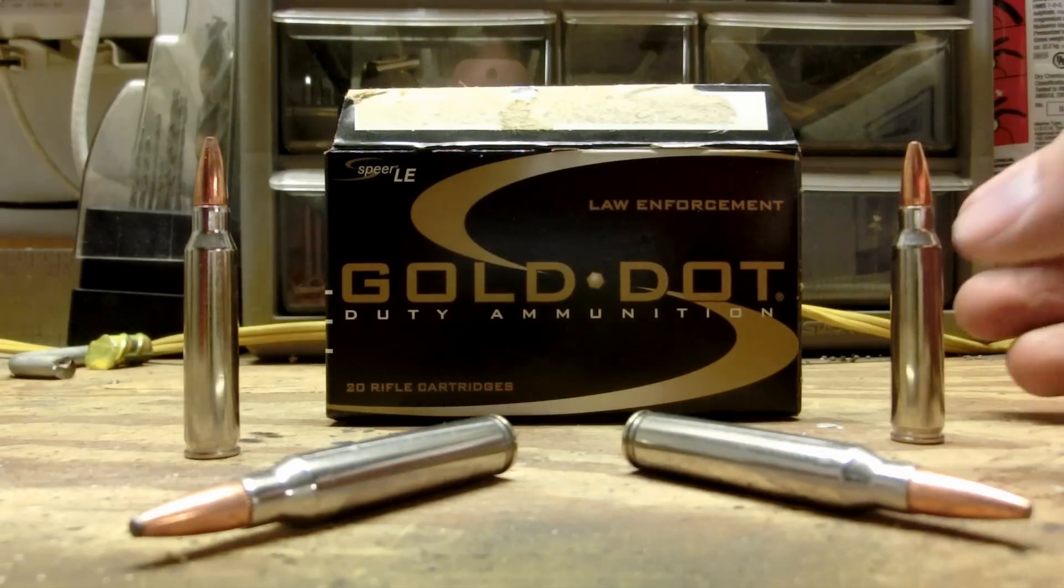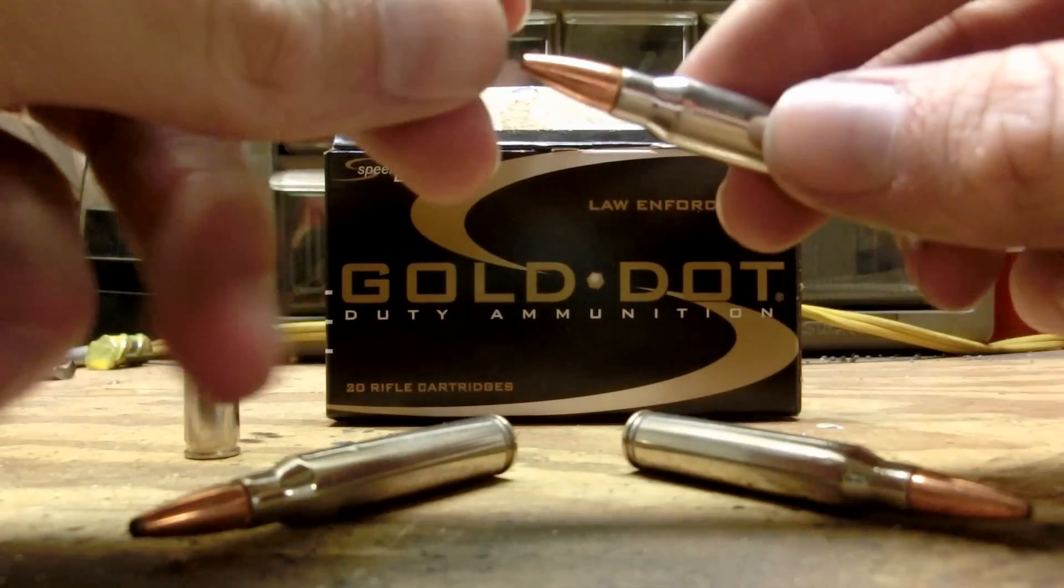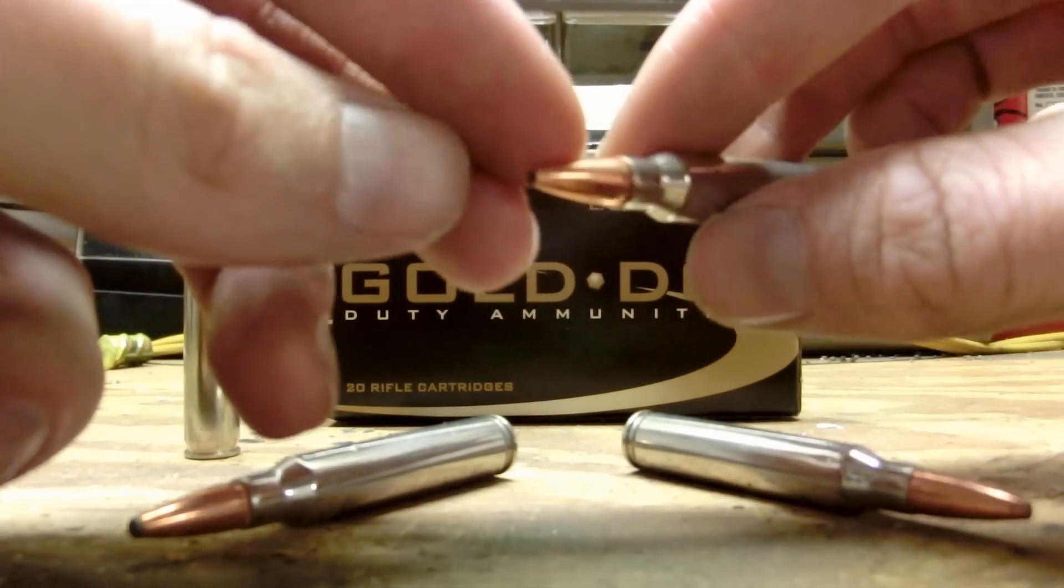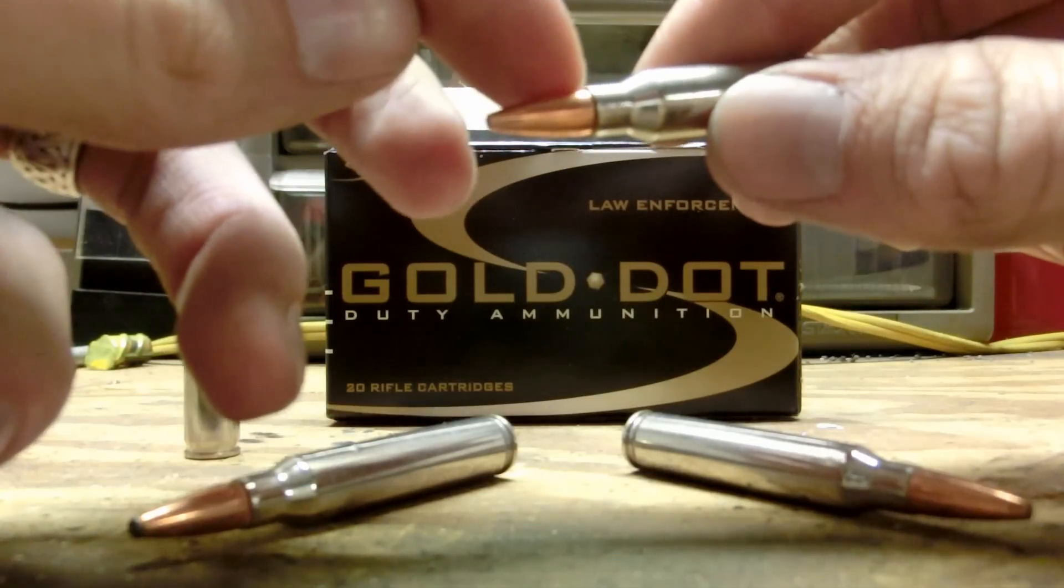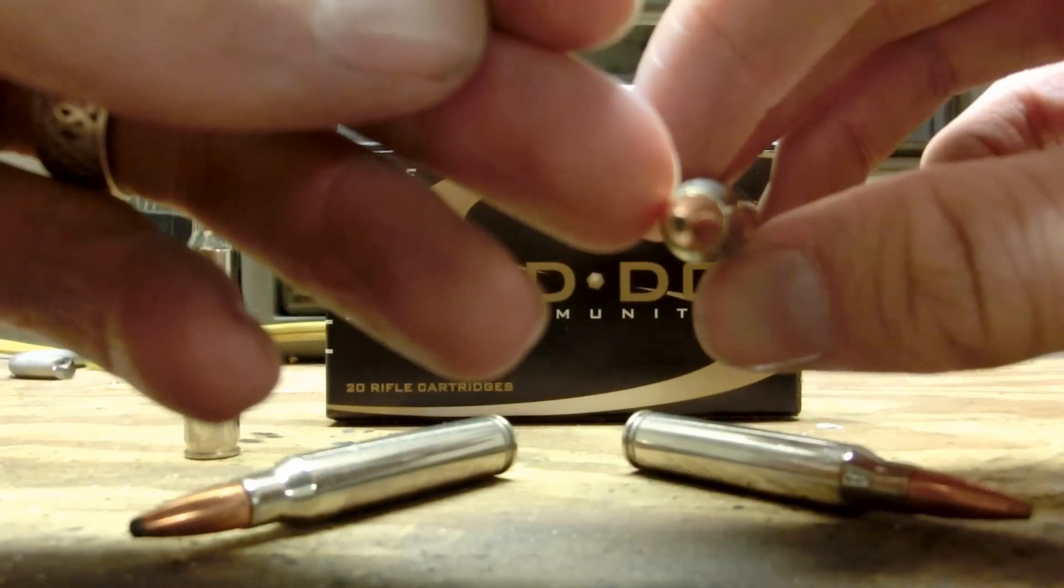For those of you unfamiliar with the Spear Gold Dot, it's a 64 grain .223 cartridge classified as a GDSP or Gold Dot Soft Point. Unlike your regular FMJ rounds where the jacket meets at the top, the top is cut off and you can see the exposed lead core.